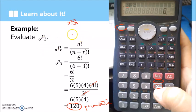For 6P3, try 6, then shift, then x, then 3, then equals sign. You should get 120. That's 120 permutations, using nPr.